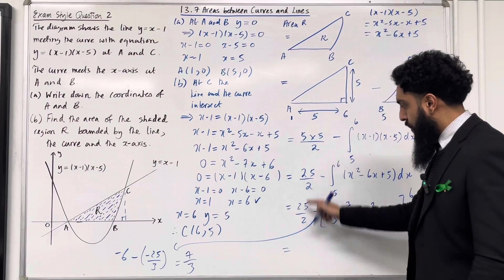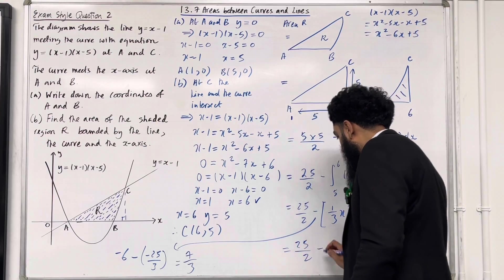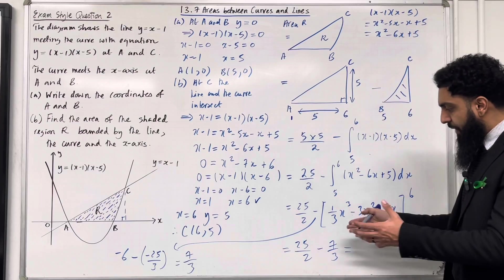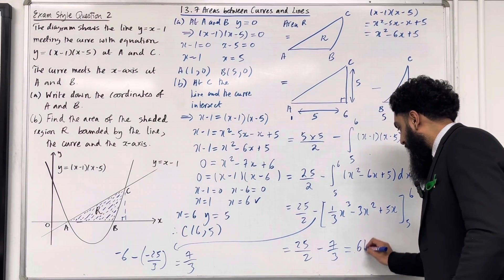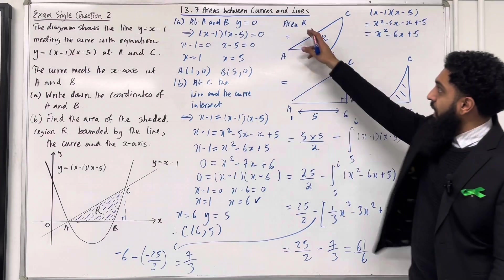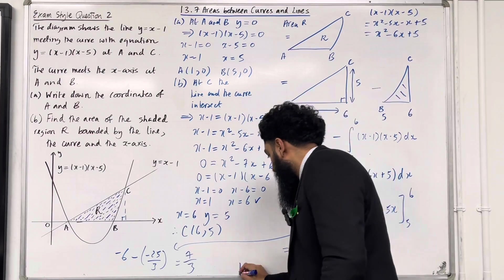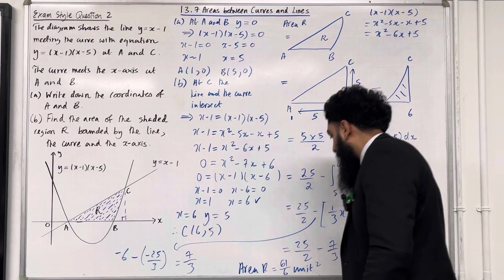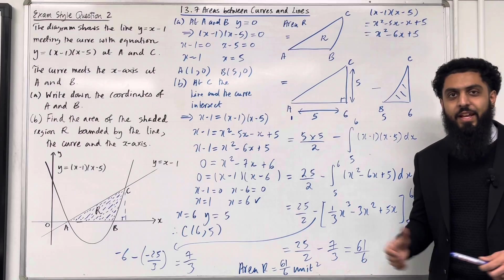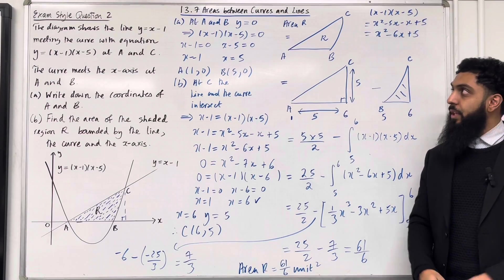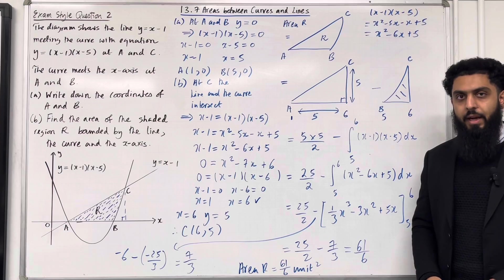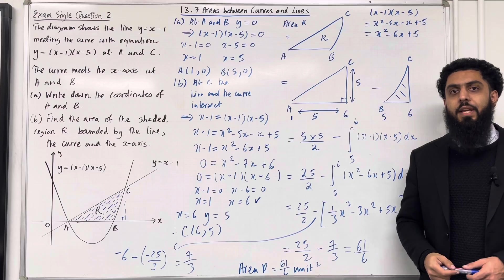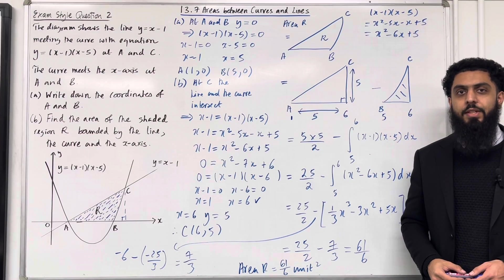So area R equals 25 over 2 minus 7 over 3. Putting this into my calculator gives 61 over 6. Therefore the area R is 61 over 6 unit squared. That completes Exam Style Question 2 and this teaching video on 13.7 Areas Between Curves and Lines. If you found this teaching video useful, please don't forget to subscribe, leave a like, leave a comment, and turn on your notification bell so that you receive notifications every time I post a new teaching video.